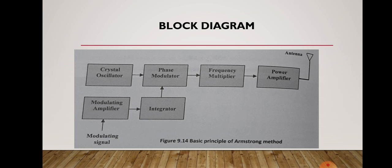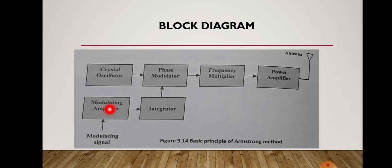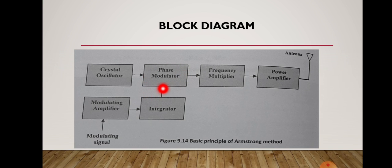Here you can see the phase modulator being used. For a modulated wave to be produced, there must be a carrier signal as well as a modulating signal. Here is a crystal oscillator that produces the carrier signal, and here is the modulating signal. First, it is amplified by a modulating amplifier and then applied to an integrator, so that signal will be integrated. That integrated version of the modulating signal is then applied to the phase modulator.